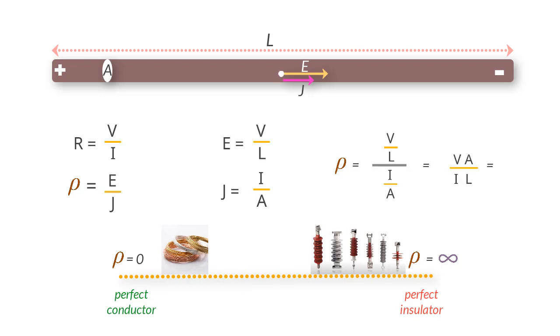That equals VA upon IL. But we know that V upon I is resistance of the wire, then what we get is Rho is equal to RA upon L or R is equal to Rho L upon A.